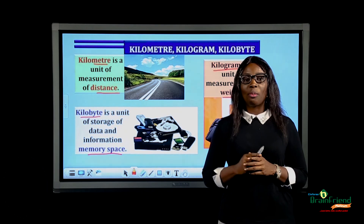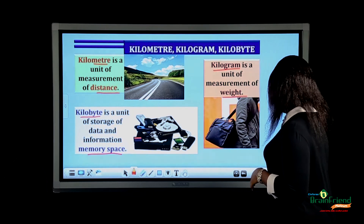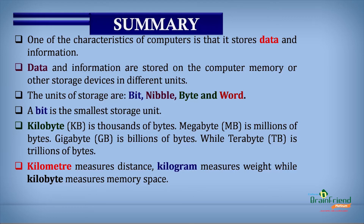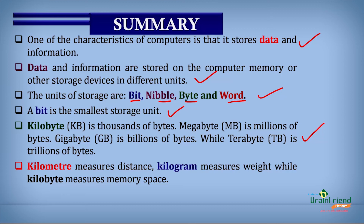And with this, we've come to the end of this lesson. Let's have a quick recap. We learned that one of the characteristics of the computer is that it stores data and information. Data and information are stored on the computer memory or other storage devices in different units: bit, nibble, byte, and word. A bit is the smallest storage unit. Kilobytes means thousands of bytes, megabytes means millions of bytes, gigabytes means billions of bytes, and terabytes means trillions of bytes. Finally, kilometer measures distance, kilogram measures weight, while kilobytes measures memory space.